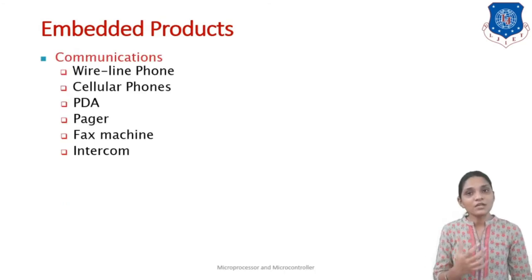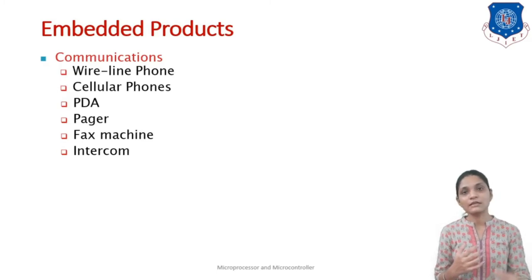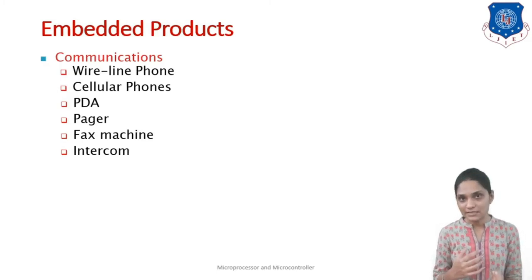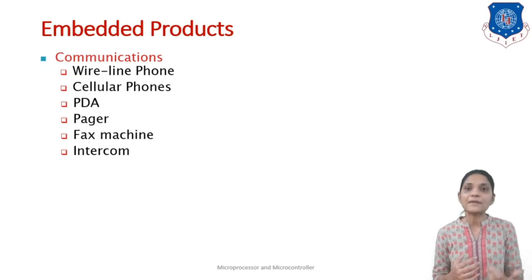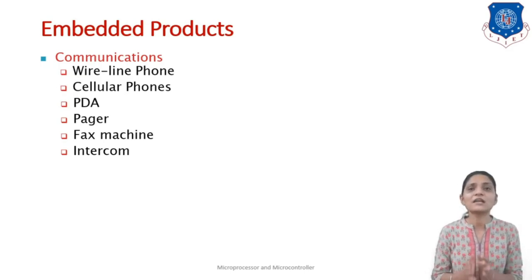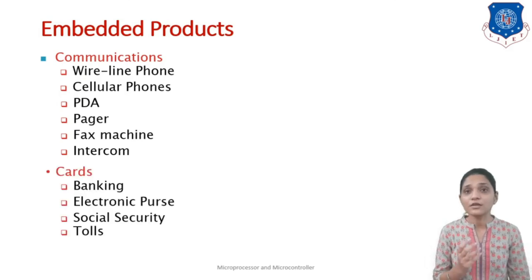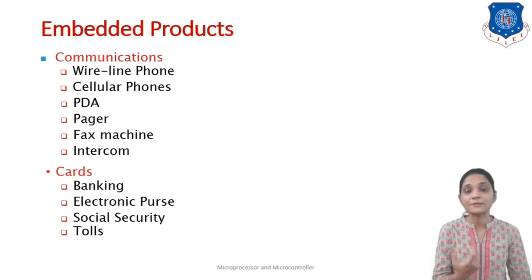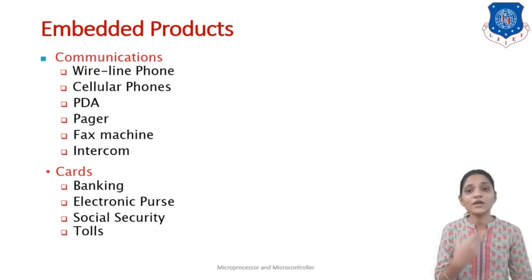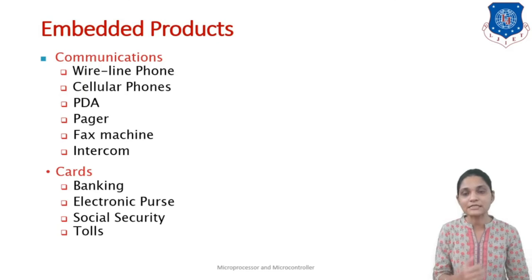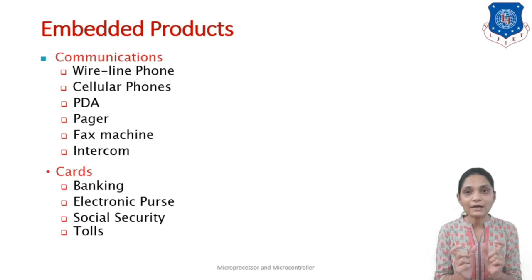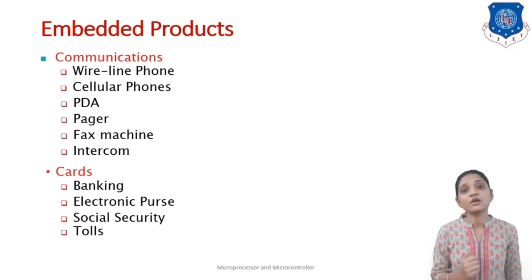Communication products such as wired telephones, wireless cellular phones, PDAs, pagers, fax machines, and intercoms are all embedded products. Cards like ATM cards, debit cards, credit cards, electronic purses, social security cards, and toll tax cards are also embedded devices — each card contains a chip which controls the data transfer.